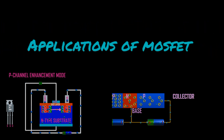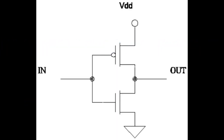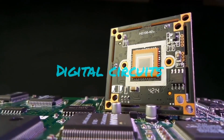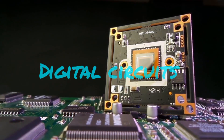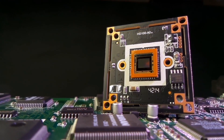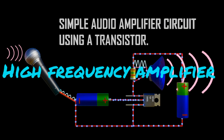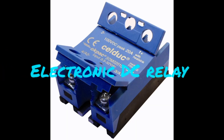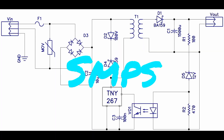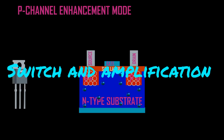Applications of MOSFET: 1. Used as an inverter. 2. Used in digital circuits. 3. Used as a passive element like an inductor, resistor, and capacitor. 4. Used as a high frequency amplifier. 5. Used in electronic DC relays. 6. Used in SMPS. 7. Used as a switch and in amplifying electronic signals in electronic devices.